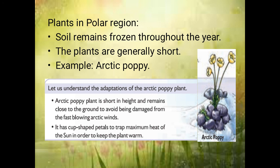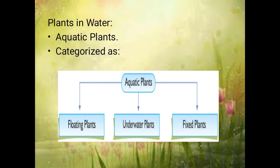And in polar regions, since the conditions are so cold, the plants that grow here are very small and very short. The example for this is the arctic poppy. These are called aquatic plants and they are categorized as floating plant, underwater plant, and fixed plant.